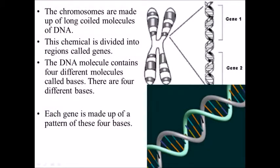Hi and welcome to my second video about genes and how they are organized within the cell. Last time, we finished by looking at the smallest subunit of genetic material, which is DNA, and how loads of pieces of DNA put together form a gene. So a gene is a section of DNA that controls a particular characteristic, something like eye colour or hair colour.